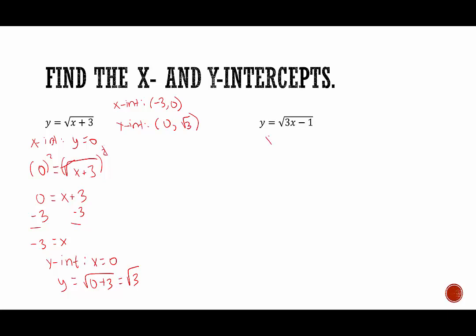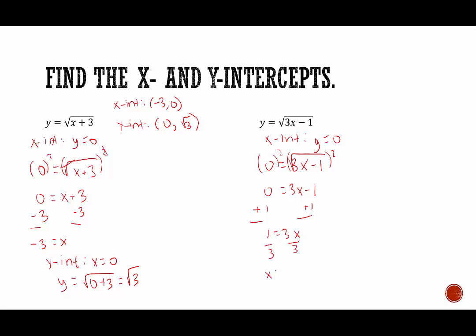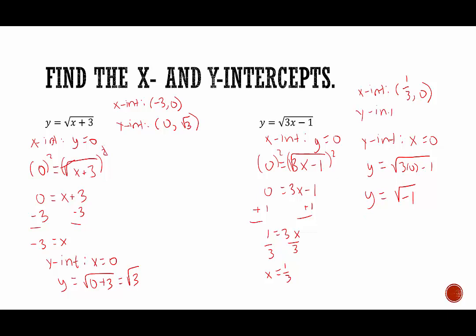For our next example, to find the x-intercept we set y equal to 0, giving us 0 equals the square root of 3x minus 1. Squaring both sides gives us 0 equals 3x minus 1. Adding 1 to both sides: 1 equals 3x. Dividing by 3, x equals 1 third. So the x-intercept is (1/3, 0). To find the y-intercept, we plug in 0 for x: y equals the square root of 3 times 0 minus 1, which is the square root of negative 1. That is not a real number — it's imaginary — indicating there is no y-intercept. This means the graph does not cross the y-axis.